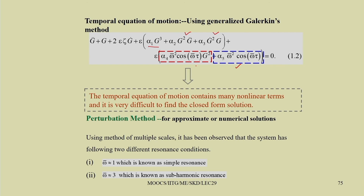Because the temporal equation of motion contains many nonlinear terms, a closed-form solution is not feasible. One can use perturbation methods (method of multiple scales, harmonic balance, method of normal forms, or Lindstedt-Poincaré technique). Using the method of multiple scales, two resonance conditions arise: simple resonance when omega_bar ≈ 1 (coefficient of G equals 1), and sub-harmonic resonance when omega_bar ≈ 3.